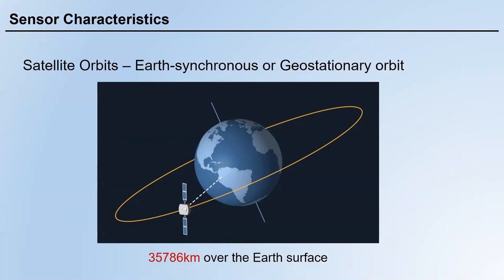This means that once a geostationary satellite is successfully launched, it will stay in the sky and look at the same area indefinitely. The advantage is that you can focus on a specific area on the Earth continuously. For example, some weather satellites use this type of orbit — if the U.S. launches a weather satellite, it should look at North America continuously.